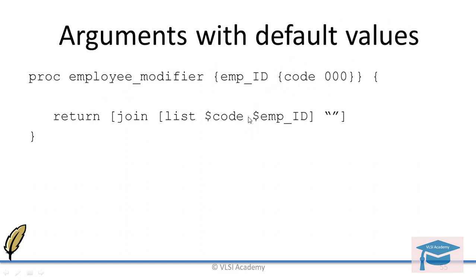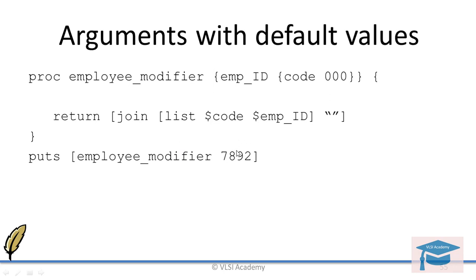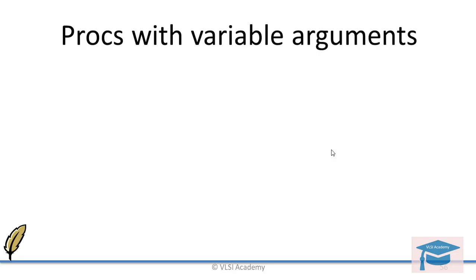But if you do not supply any code value — for example, you call employee modifier and supply only the employee ID without the code — it will add the default value 000 as the prefix. This is how the output will look after running the function. That is how it works.